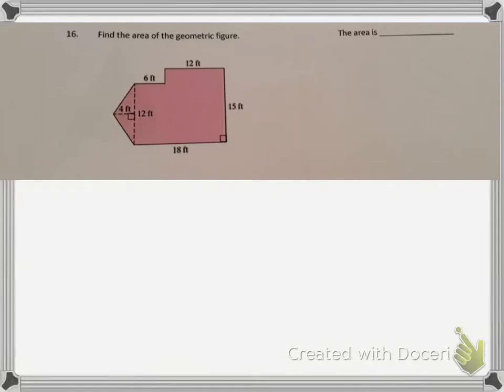Find the area of the geometric figure. This figure is a composite figure made up of two rectangles and one triangle.